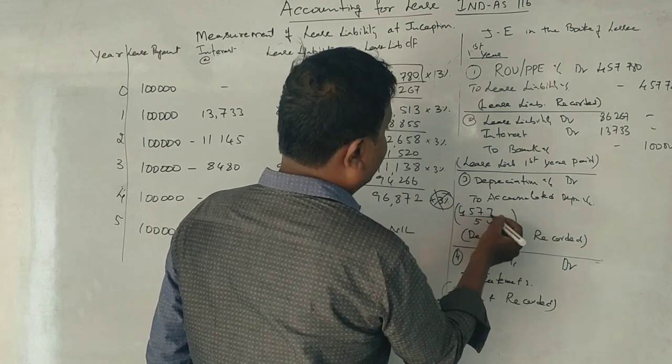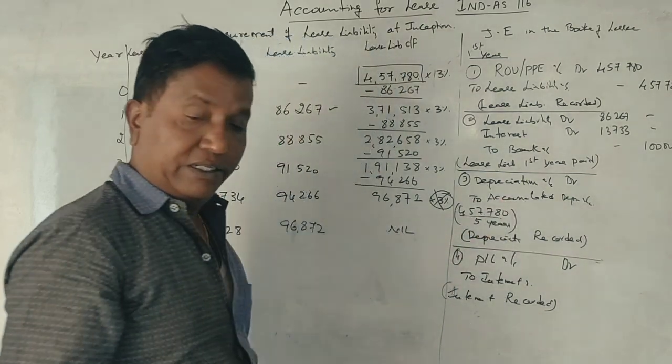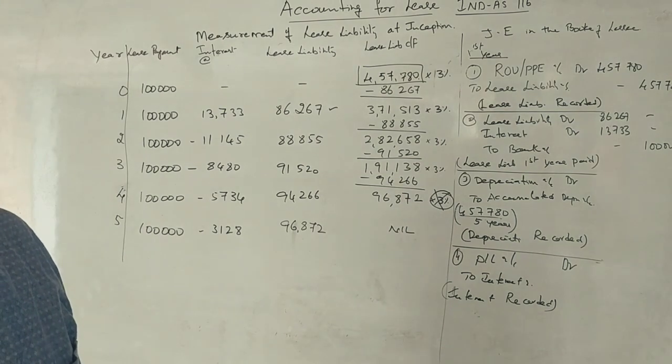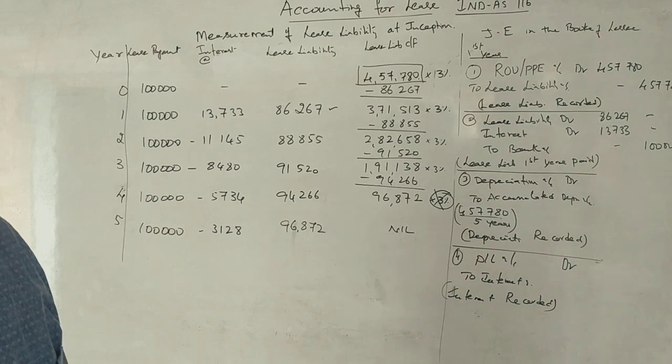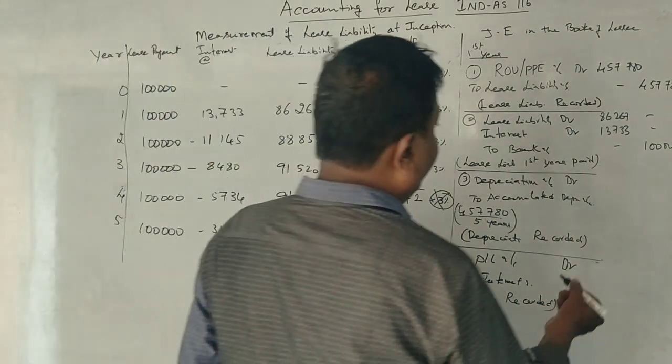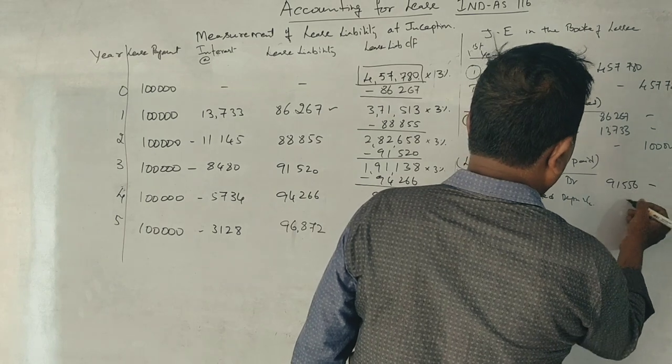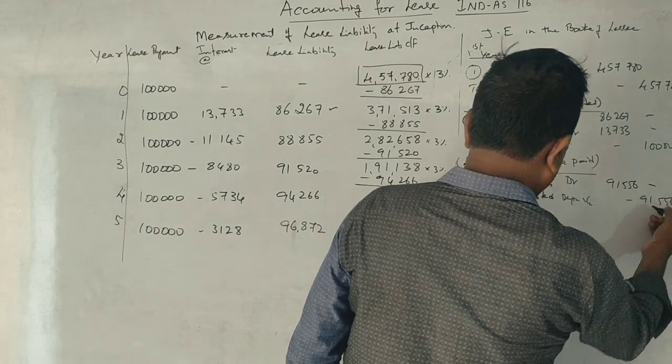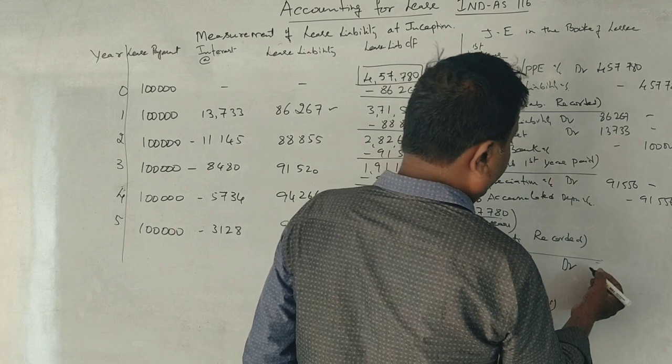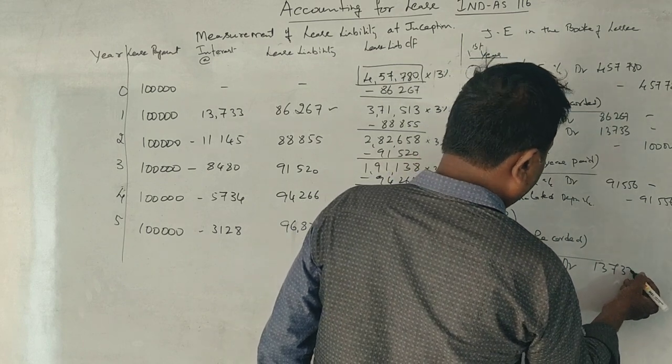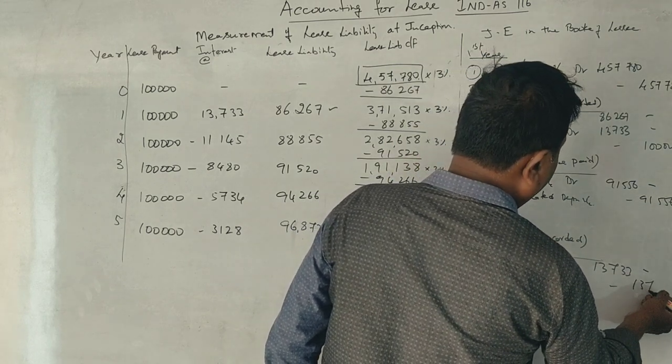Depreciation: 4,57,780 divided by 5 equals 91,556. Lastly interest amount 13,733 transfer to profit and loss.